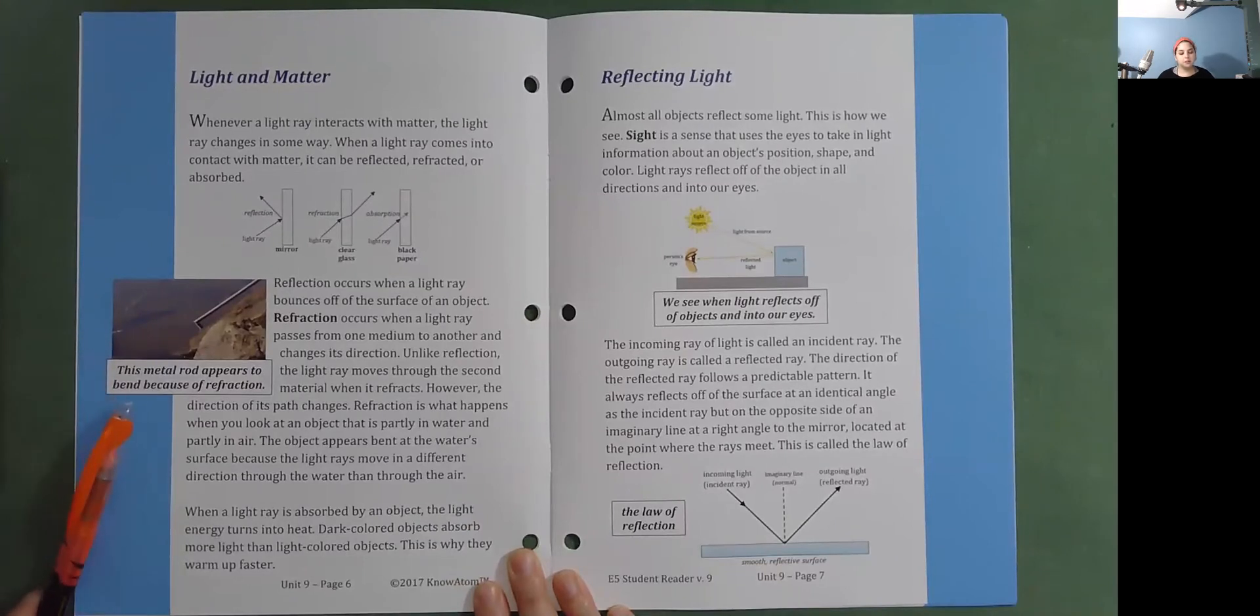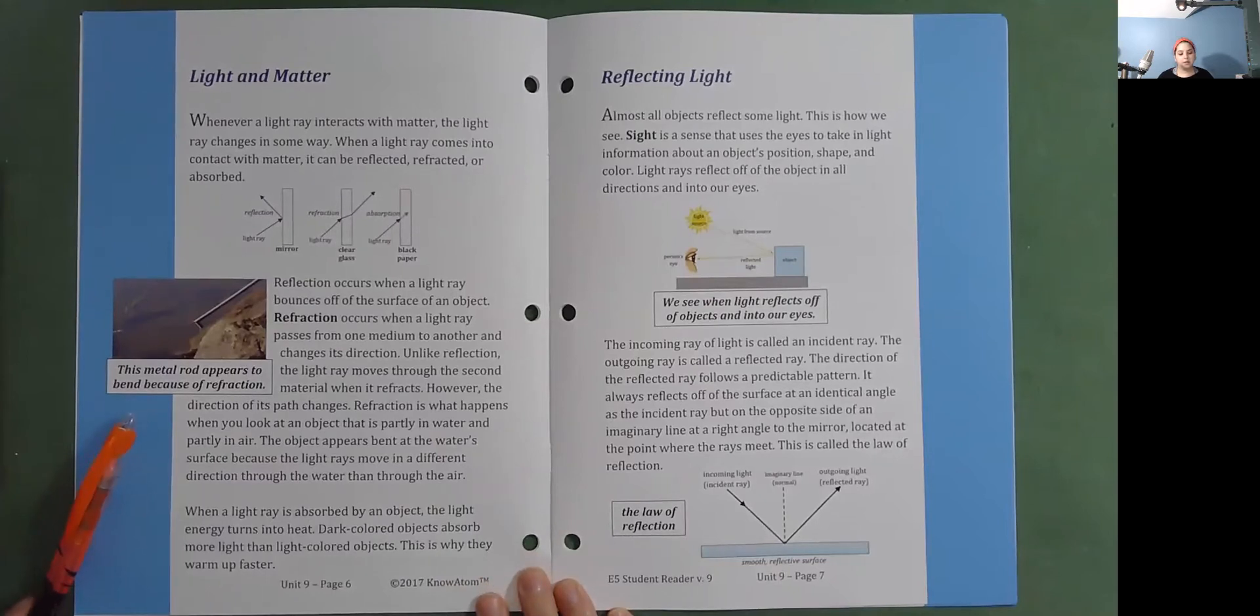However, the direction of its path changes. Refraction is what happens when you look at an object that is partly in water and partly in air. The object appears bent at the water surface because the light rays move in a different direction through the water than through the air.